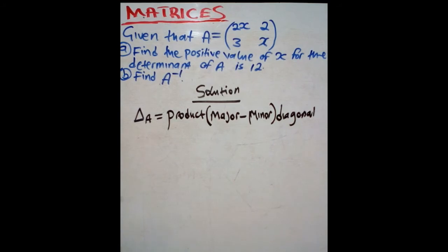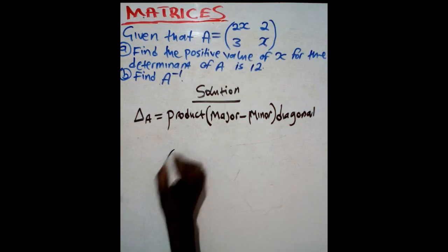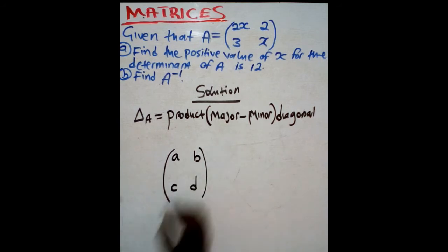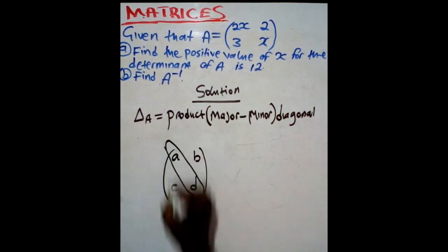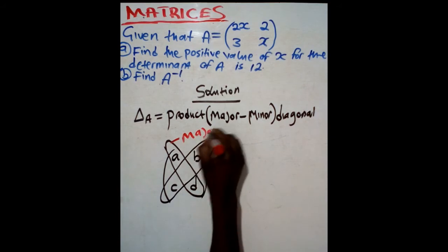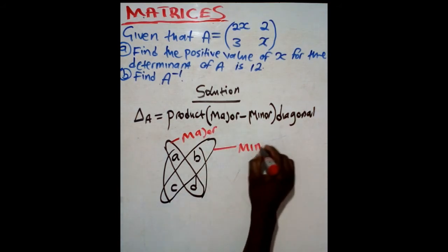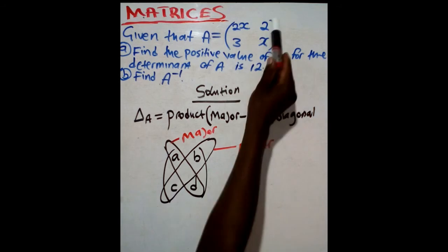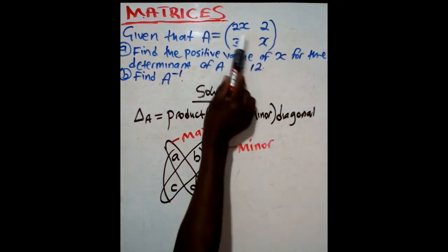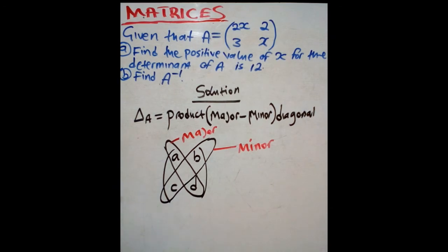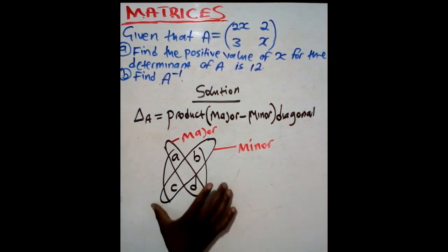You need to identify the major and the minor diagonal. If a 2 by 2 matrix is in the form A, B, C, D — this is called the major diagonal, and this is called the minor diagonal. According to what we have here, where we have 2X and X, that is the major diagonal. Where we have 3 and 2, that is the minor diagonal.